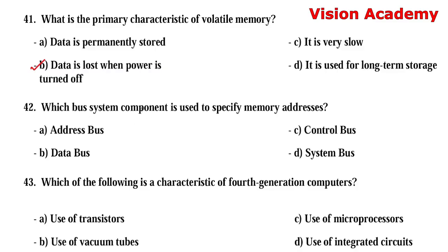Question 42: Which bus system component is used to specify memory addresses? Option A: address bus. Option B: data bus. Option C: control bus. Option D: system bus. The right answer is Option A, address bus.